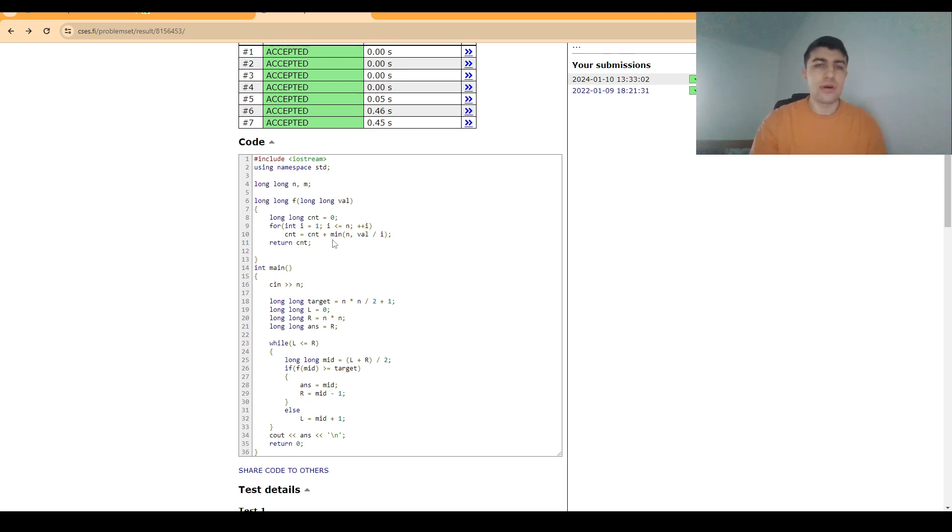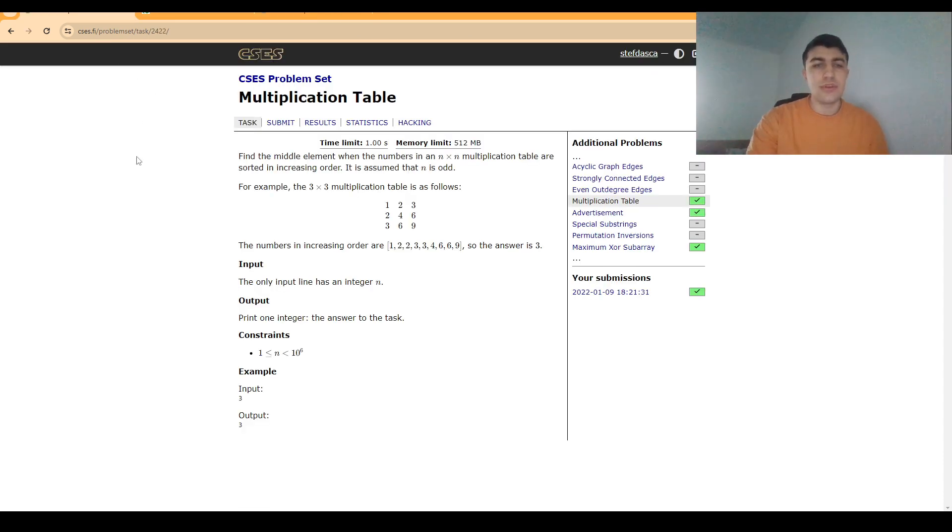f2(mid, i), which is as I said, minimum between n and that ratio. And it's very important to use long longs for all of these computations, as the number of squares in the grid can become as big as 10 to the 12, since the maximum n is 10 to the 6.